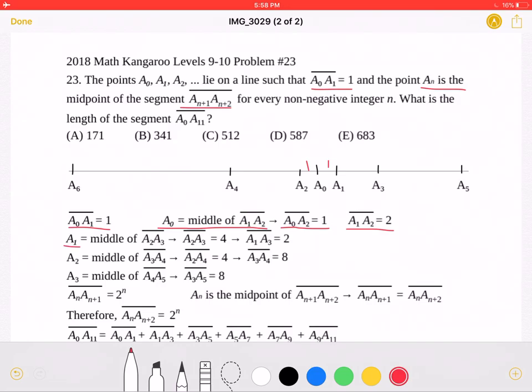a1 is the middle of segment a2a3. Segment a2a3 must be equal to 4 because we already know that a1a2 is equal to 2.